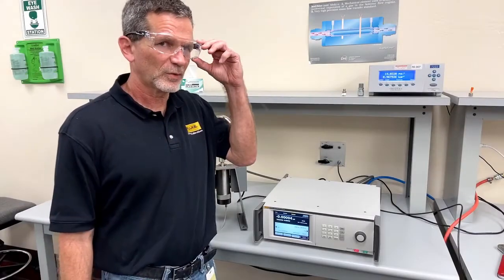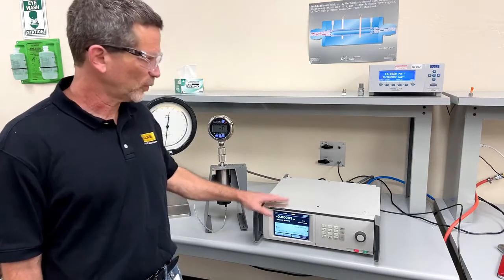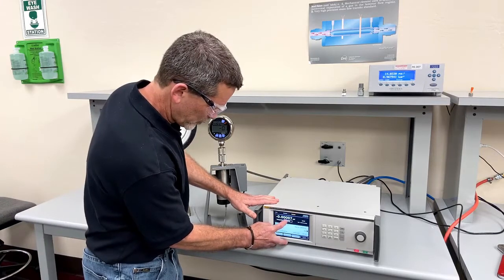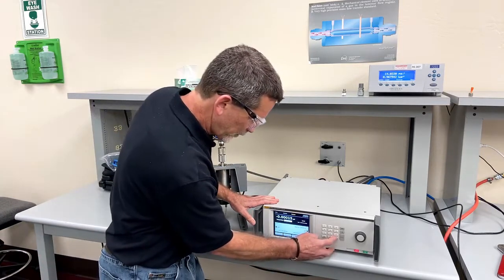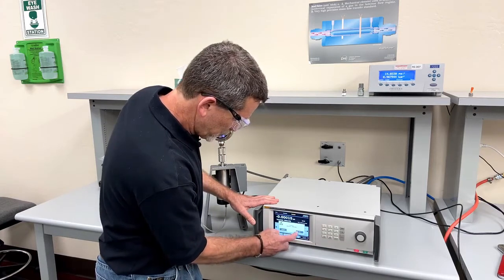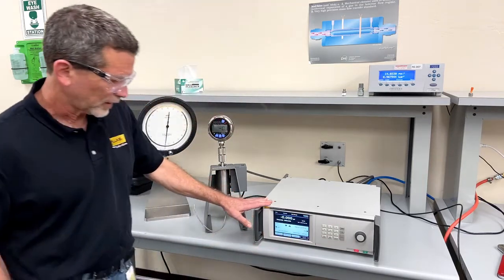In this brief example, we're going to set a 3,000 PSI test point to compare the device under test to the controller, the reference. We simply touch the field corresponding to set point, enter in 3,000 PSI, and tell the pressure controller to control, and it's on its way.